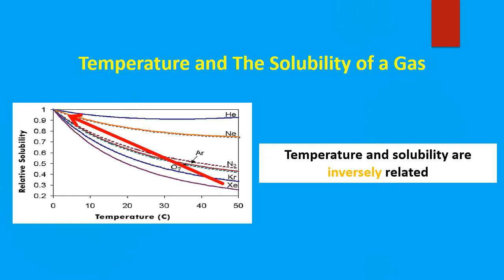Hence the reason why when they make carbonated beverages, it's usually at a cold temperature, so that we're going to increase the solubility. And if you store your soft drinks, your carbonated beverages at a high temperature, the gases come out of solution because the gases are less soluble at high temperature.